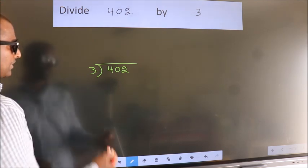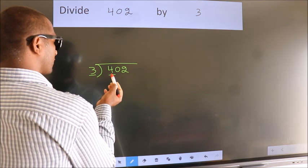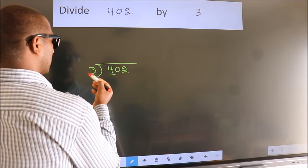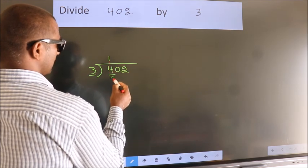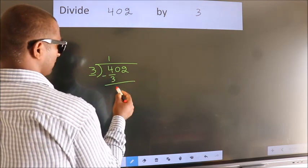Next, here we have 4, here 3. A number close to 4 in the 3 table is 3 times 1 is 3. Now we should subtract. We get 1.